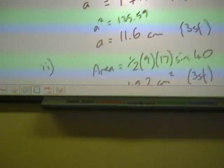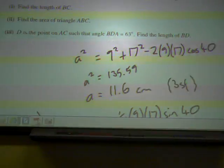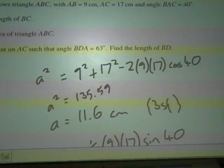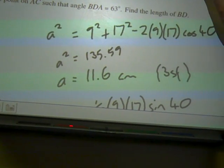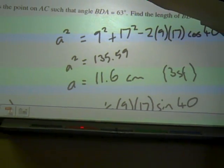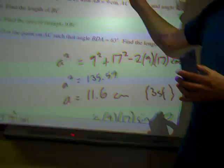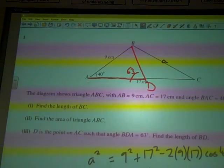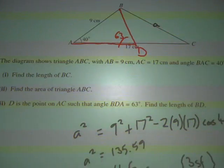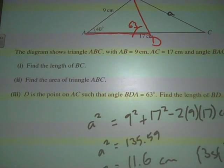Part three. D is the point on the line AC such that the angle BDA is 63 degrees. So D is a point somewhere along the line AC, and the angle from B to D to A is 63 degrees. It looks like we've got something like that going on, with an angle of 63 degrees and the point D somewhere on the line AC. It's important to get a diagram to get a feel for what's going on here. Find the length of BD.